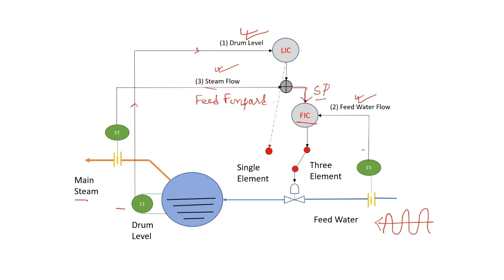But can this three element drum level control be used throughout the process of the boiler? No, because when the boiler starts up, the flow of the main steam and the feed water flow both are insignificant.